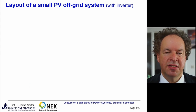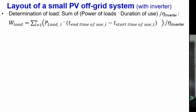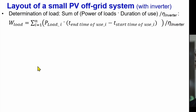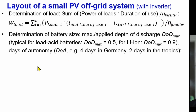The system design plan is covered in the lecture. First, we determine the load by taking the power of each load and its duration of use — end time minus start time — and summing these for all n loads. If an inverter is present, we must also account for inverter efficiency. Then we determine the battery size using the maximum allowable depth of discharge.